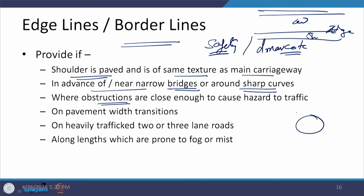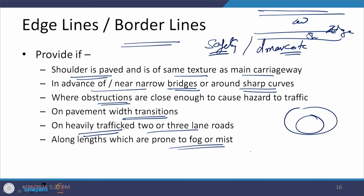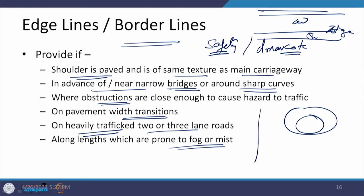Edge markings should be provided all along any object — circular or longitudinal — where width transitions exist, on two or three lane roads with heavy traffic, and in areas where fog or mist may occur in winter to demarcate the carriageway edges and ensure vehicle safety. In all these cases, the markings should be reflective in nature so they can be seen clearly.